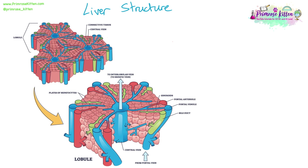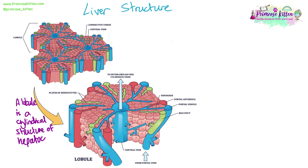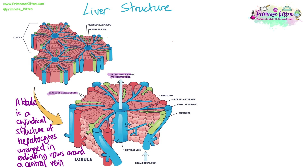Now let's look at the internal structure. The liver is made up of sections called lobules. A lobule is a cylindrical structure of hepatocytes, which are liver cells. These are arranged in spirals or in straight lines that radiate out from the centre, and in the centre there is a central vein, which is a branch of the hepatic vein.